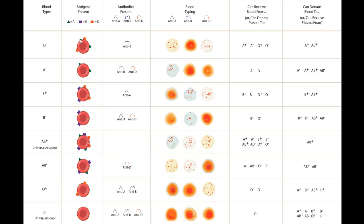Someone with A positive blood would not have anti-A or anti-D antibodies, but would have anti-B. A negative makes anti-B and anti-D. B positive makes anti-A. B negative makes anti-A and anti-D. AB positive has all three antigens recognized as self, so no antibodies are made. AB negative makes only anti-D. O positive makes anti-A and anti-B. O negative makes all three antibodies because none of the antigens are present on their red blood cells.